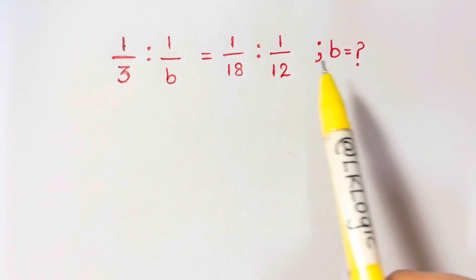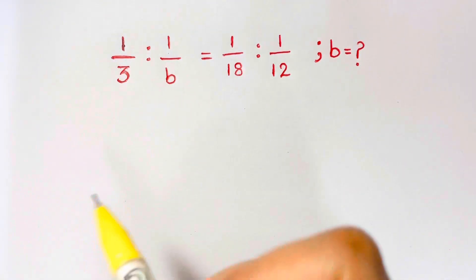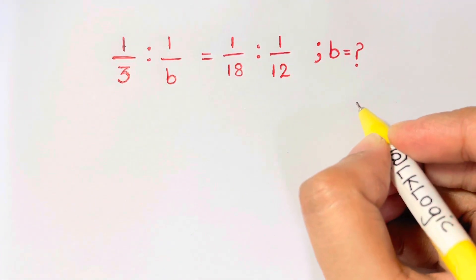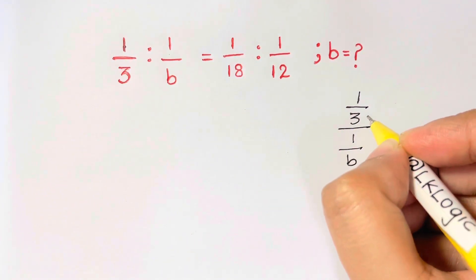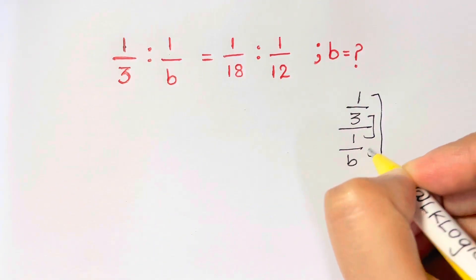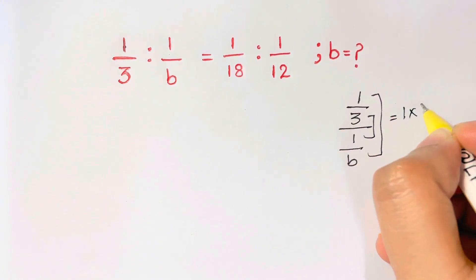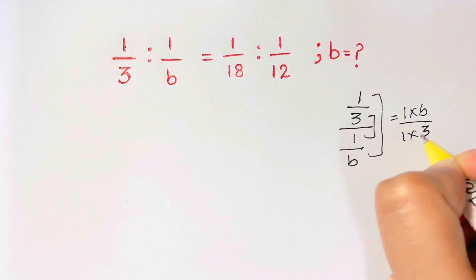So what do we do here? The ratio here means you're just dividing them. 1 over 3 over 1 over B. And we just multiply the inside values and the outside values. So 1 times B over 1 times 3.